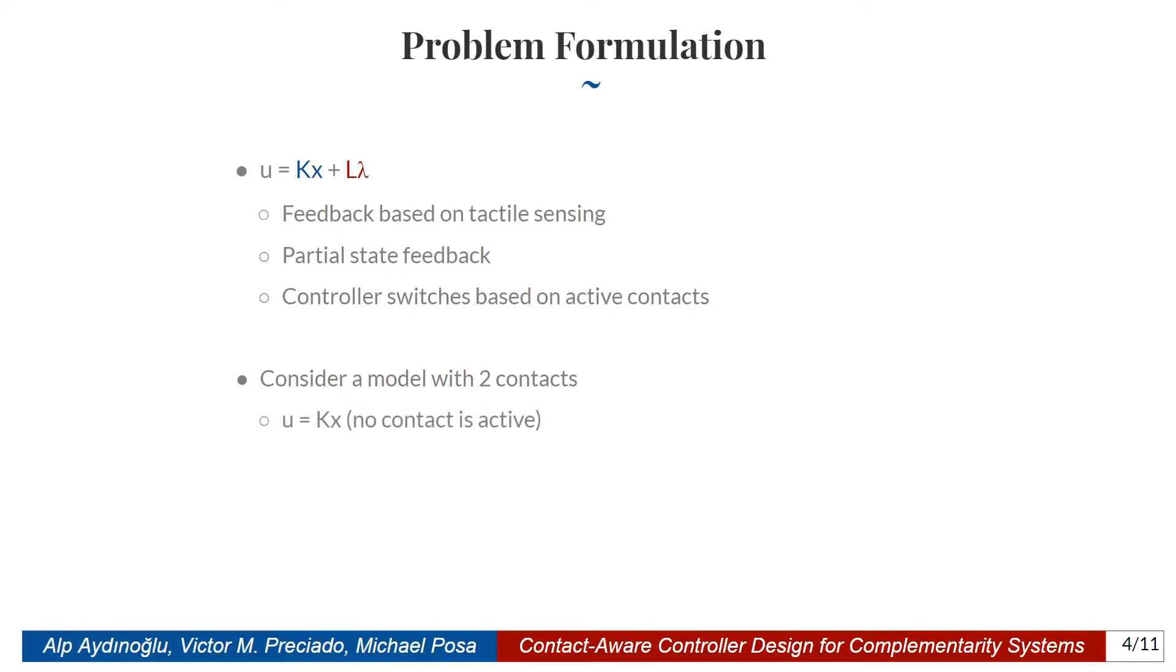In order to understand how this works, we construct a model with two contacts. Here, if none of the contacts is active, U equals KX, which is the state feedback form. If only contact 1 is active, we get contribution from the term L1 lambda 1. If only contact 2 is active, we get contribution from L2 lambda 2. If both are active, we get both contributions. Here, observe that our controller is a compact hybrid controller, which is a middle ground between the state feedback controller and purely hybrid controller.